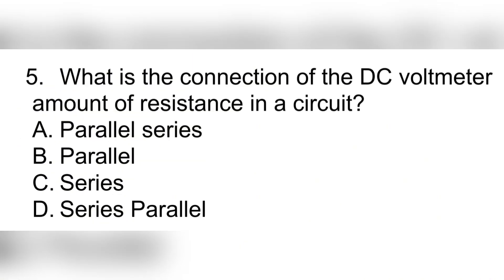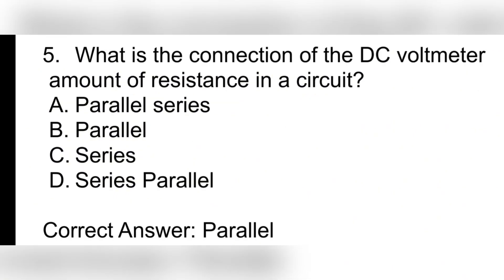Question 5. What is the connection of the DC voltmeter to measure the amount of resistance in a circuit? A. Parallel series. B. Parallel. C. Series. D. Series parallel. Correct answer: B. Parallel.